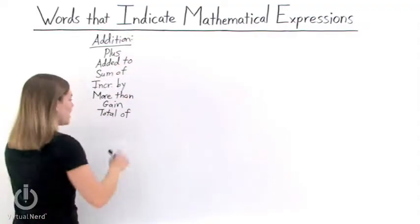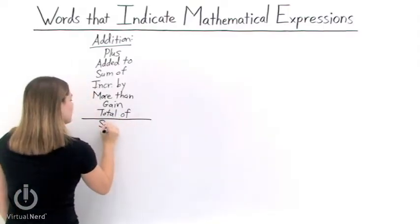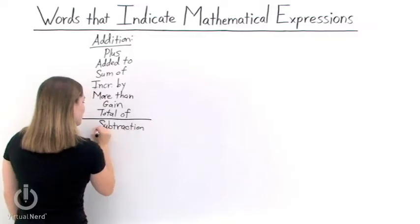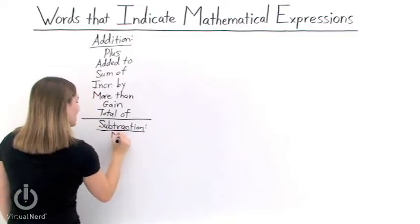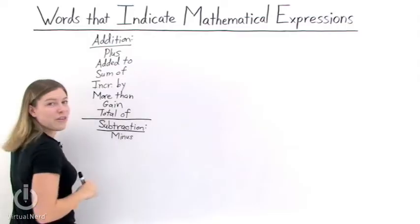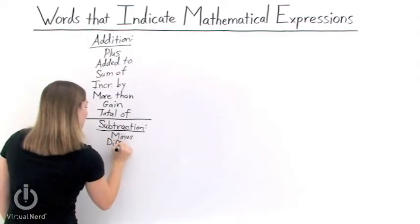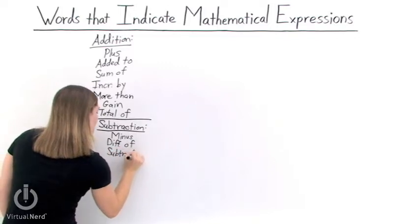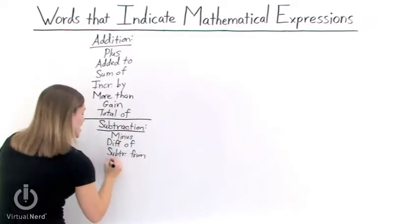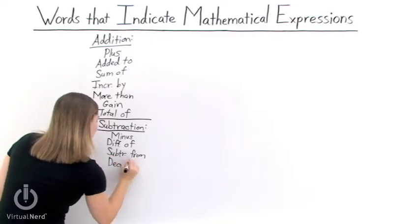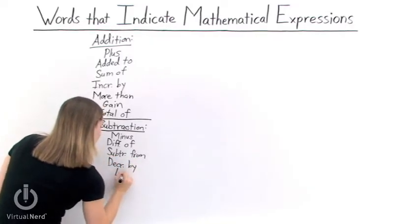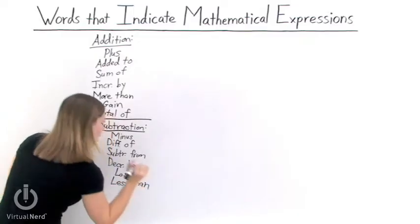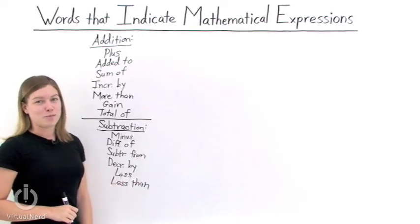Now let's look at subtraction. Here's a list of words that when we read them mean subtraction: minus, the difference of, subtracted from, decreased by, loss, and less than. If we see any of these words, it means that we're supposed to subtract.